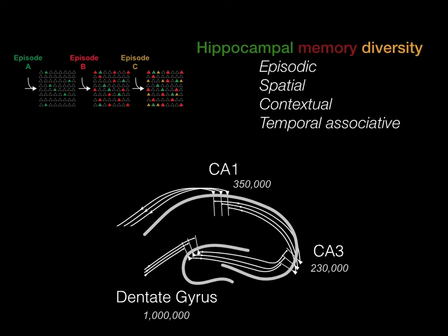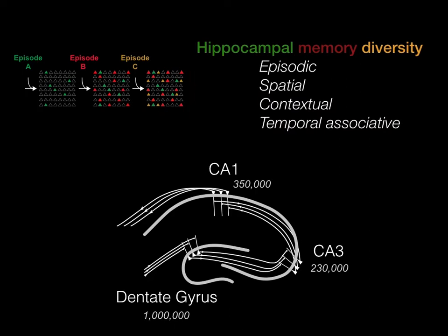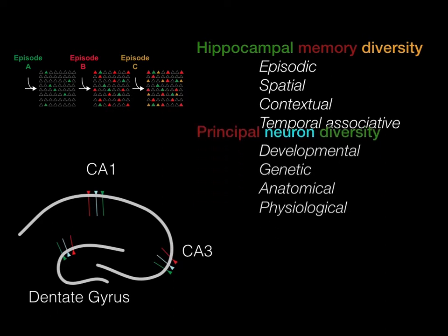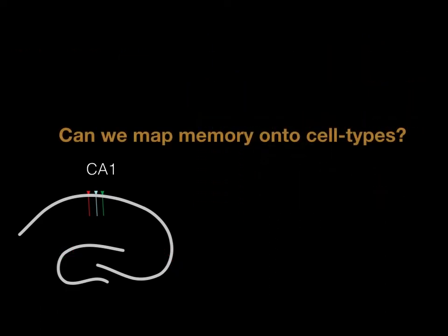However, one limitation of this framework is its inability to explain how a single circuit can reliably process and store memories acquired under dramatically different learning conditions. Similarly, the traditional conceptualization of principal neurons within each region as homogeneous and uniform coding units is untenable. A recent body of work has provided mounting evidence that hippocampal principal cells vary greatly in terms of their developmental origin, genetics, as well as their anatomical and physiological properties. It is therefore tempting to speculate that distinct subpopulations of principal neurons may encode different features of the environmental context and differentially contribute to hippocampal learning.